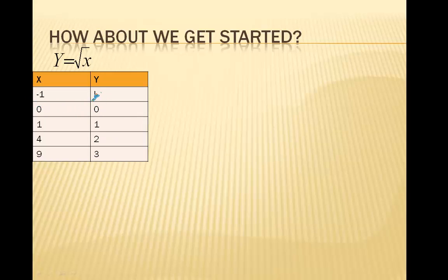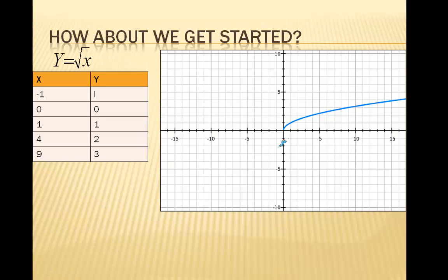So negative 1 and i. Negative 1, square root of negative 1 is i. i does not go on a square root graph because there is no i on the coordinate plane, because it is all real numbers. So then we have 0, 0, 1, 1, the next perfect square after 1 is 4, and that one is 2, and 9, 3.